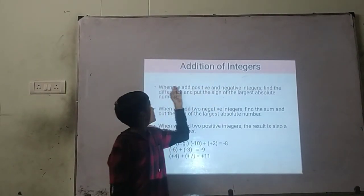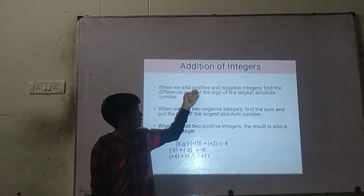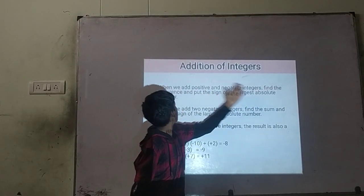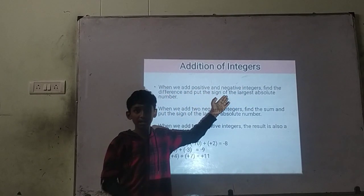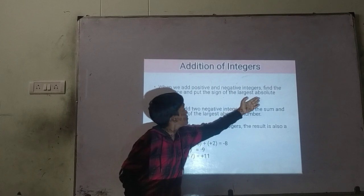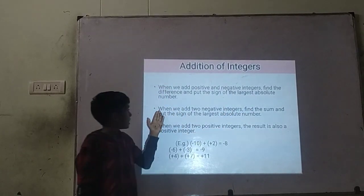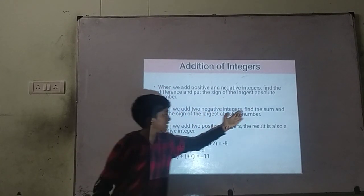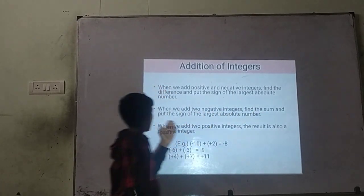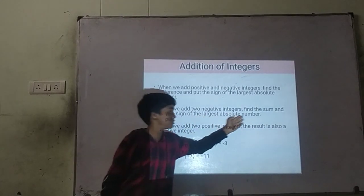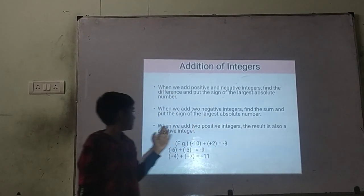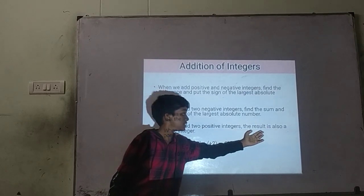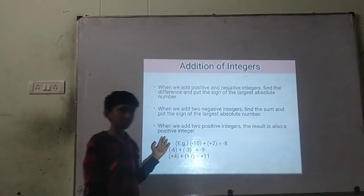Addition of integers. When we add a positive and negative integer, find the difference and put the sign of the largest absolute number. When we add two negative integers, find the sum and put the negative sign. When we add two positive integers, the result is also a positive integer.